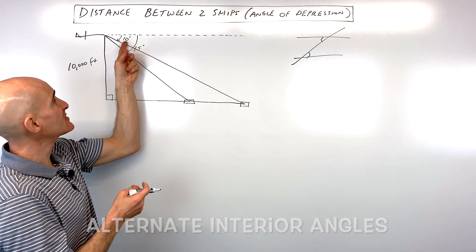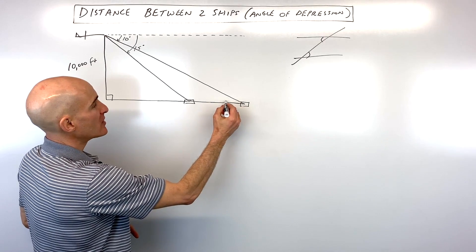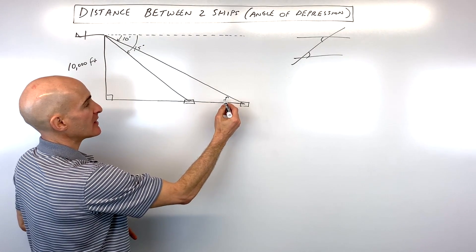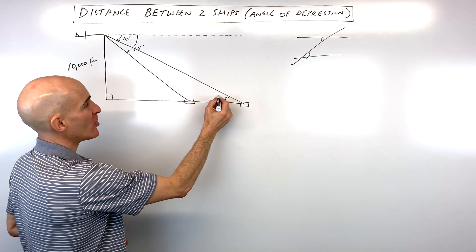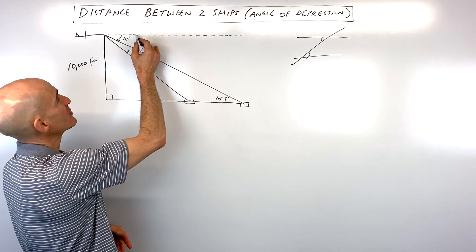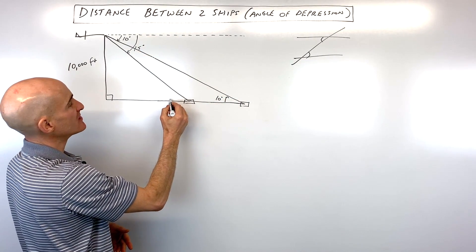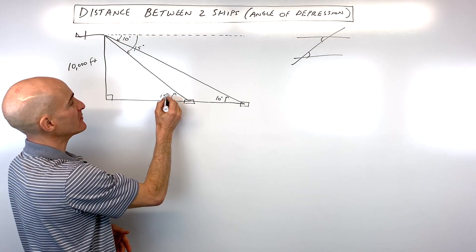So if we know that this angle here is 10 degrees, from this boat here, the angle up or elevation is also going to be 10 degrees. Same thing here. If this angle is 15 degrees, this angle from this ship up is going to be 15 degrees.